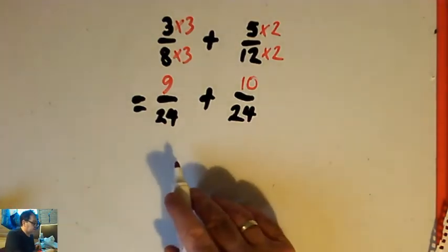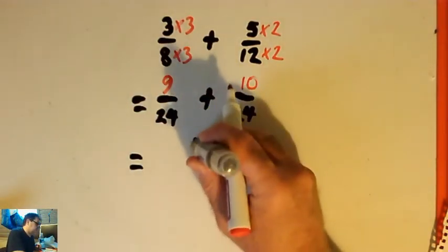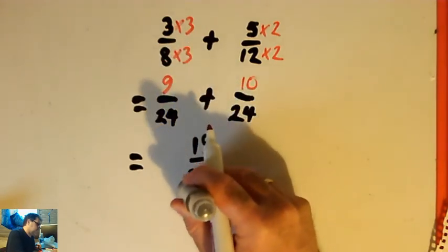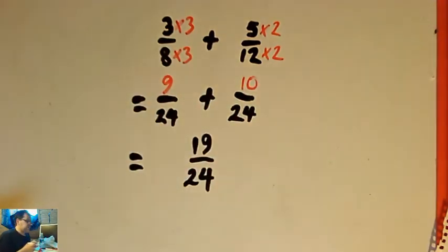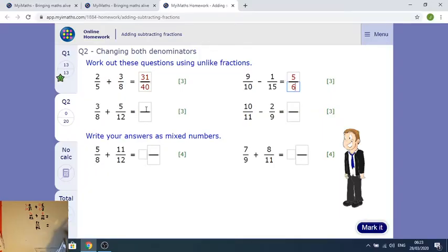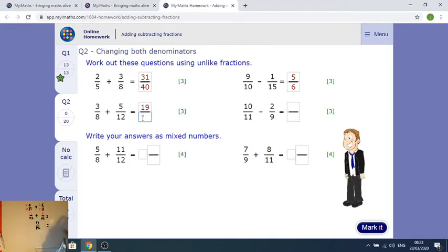So it's 9 twenty-fourths plus 10 twenty-fourths, which makes 19 — add up the tops, bottom stays the same — 19 twenty-fourths. Filling that in on my iMaths screen: 19 over 24.